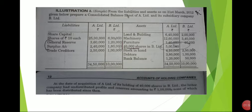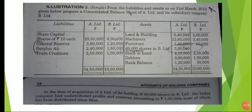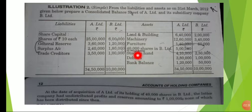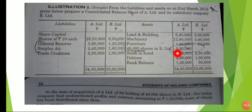Now we have a simple problem here. It's a degree-level problem, so it's tough. If you have a screenshot of this question, let's take a look. From the liabilities and assets as on 31st March 2012, prepare a consolidated balance sheet of A Limited and its subsidiary company B Limited. If company A holds shares in company B, that is on the asset side of A, 45 shares available in B Limited.